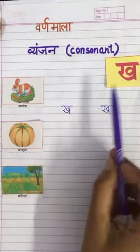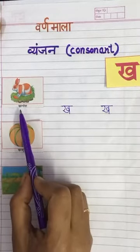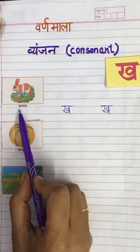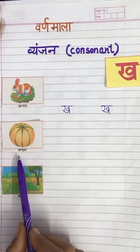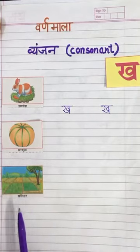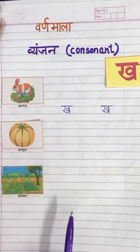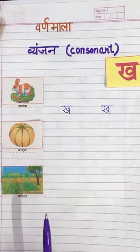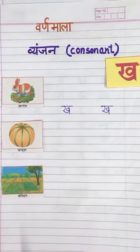خ خ سے کیا کیا ہوتا ہے؟ خ سے خرگوش، خ سے خربوجا، خ سے خلیہان، خ سے کھیت — اور خ سے بہت سی الگ چیزیں ہو سکتی ہیں۔ Thank you.